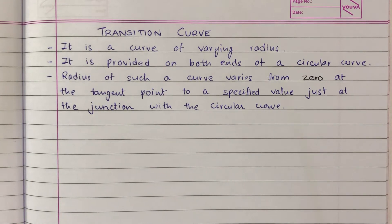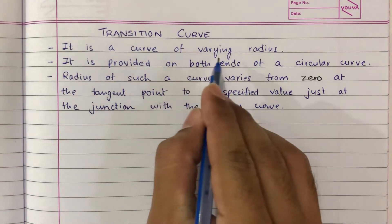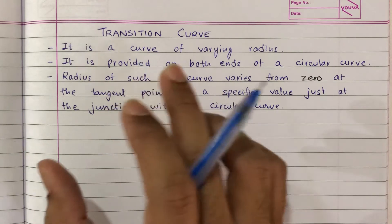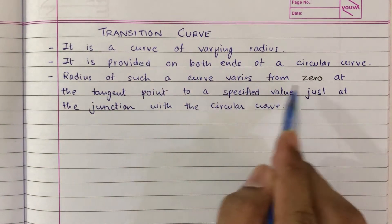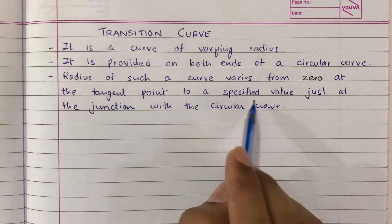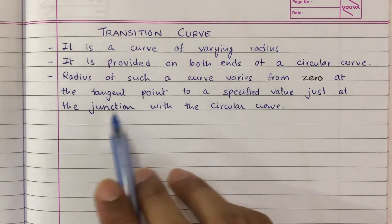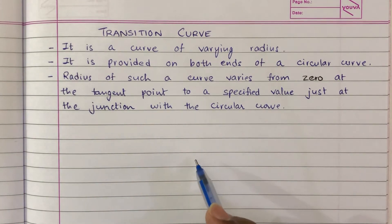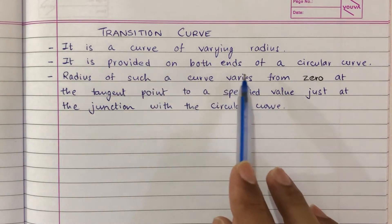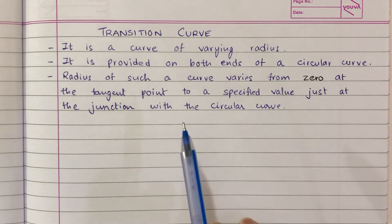A Transition Curve is a type of horizontal curve and it is a curve of varying radius. The radius varies from 0 at the tangent point to a specified value just at the junction with the circular curve. This transition curve is actually provided on both ends of a circular curve.